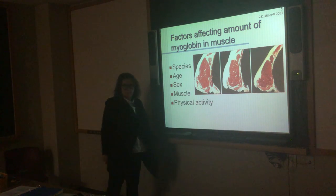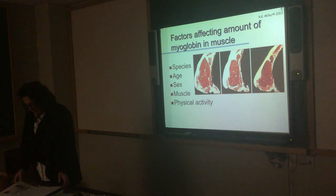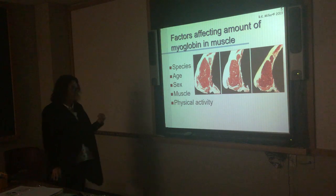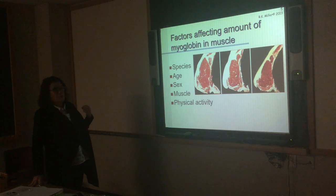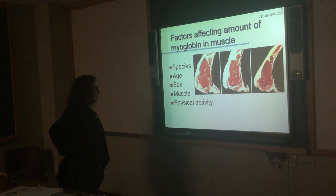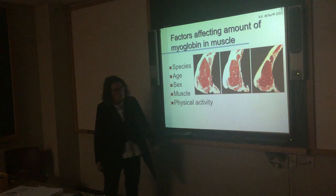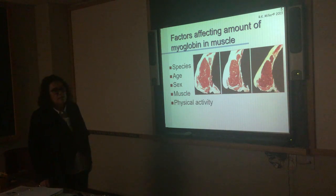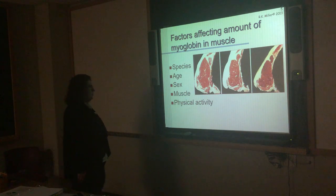Muscles also differ in amount of myoglobin. Different muscles have different colors. The bottom round and inside round — the semimembranosus — are locomotion muscles that need more oxygen and have more myoglobin versus the longissimus dorsi. Top butts are used to move the leg and also have more myoglobin. We can change the amount of myoglobin in a muscle by physical activity — if you train as a marathon runner, you will slowly increase the amount of myoglobin in the muscle.